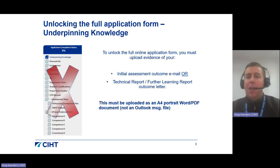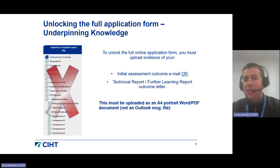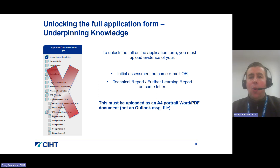When you open the application portal for the very first time you will only have access to the first section, which has the title 'Underpinning Knowledge', so at this stage all of the other sections will be greyed out and inaccessible until this first section has been completed. To unlock the full online form you must upload evidence of your initial assessment outcome email, which confirms that you are eligible to apply for professional review, or your outcome letter which confirms that you have successfully completed the technical report or further learning report stage of the process.